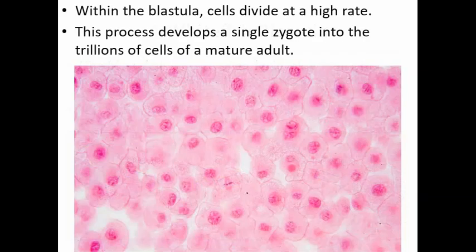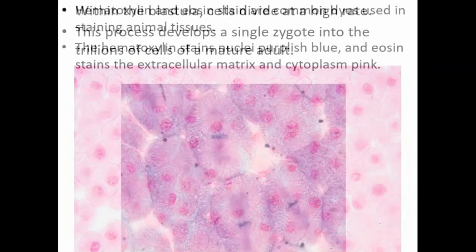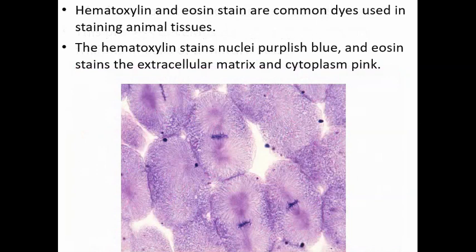If we stain a blastula, within the blastula the cells are dividing at a high rate. This process is what leads a single zygote cell to grow and divide into the trillions of cells of a mature adult. Hematoxylin and eosin stain are common dyes used in staining animal tissues like this. The hematoxylin stains the nuclei a purplish blue and the eosin stains the extracellular matrix and the cytoplasm pink. So that brings out these structures that would be hard to visualize otherwise.